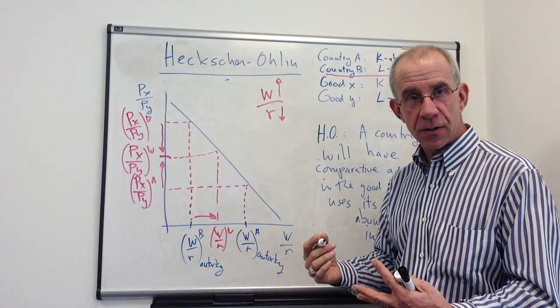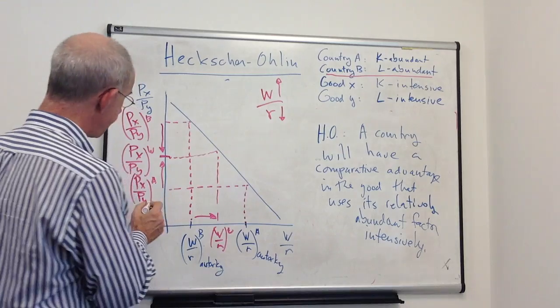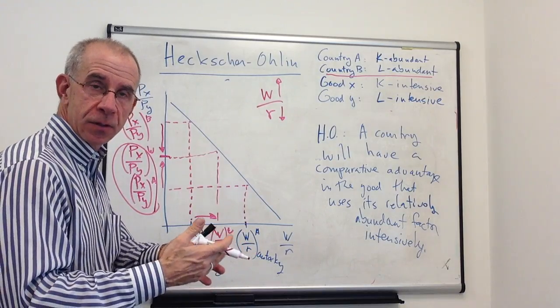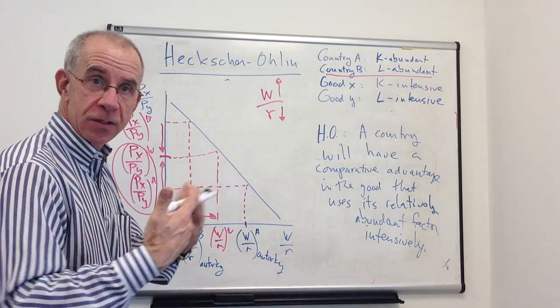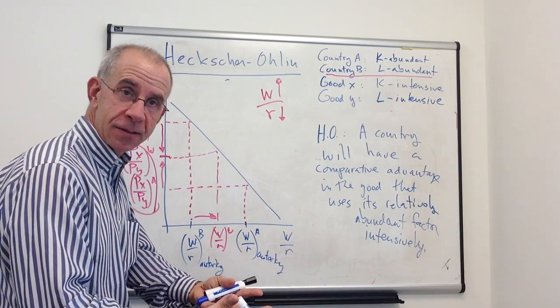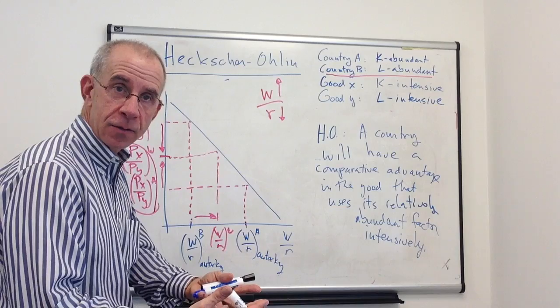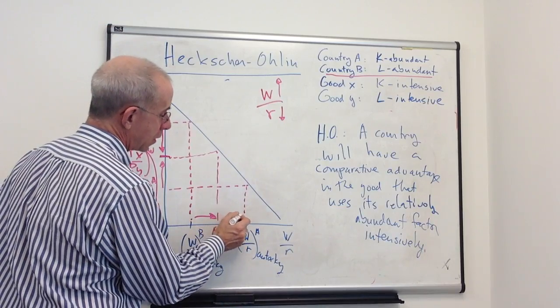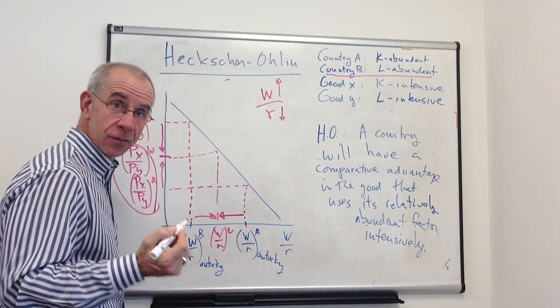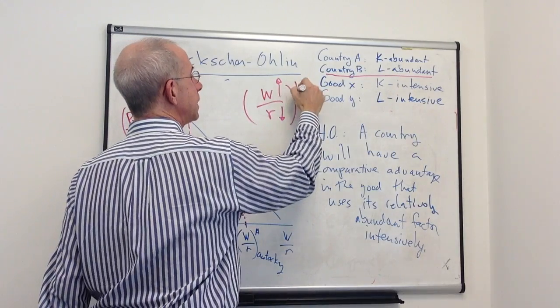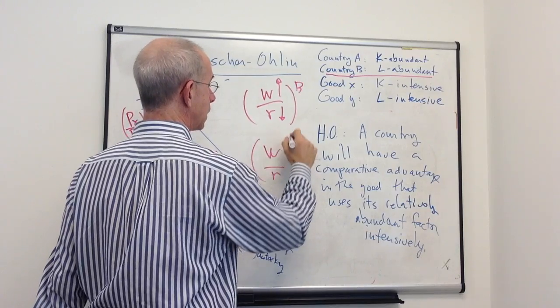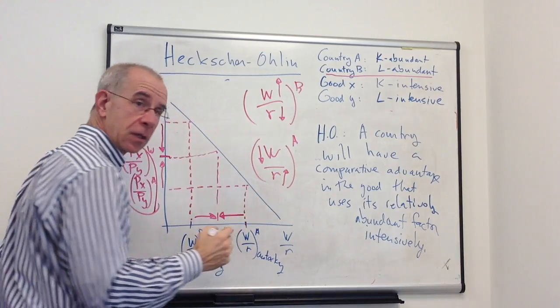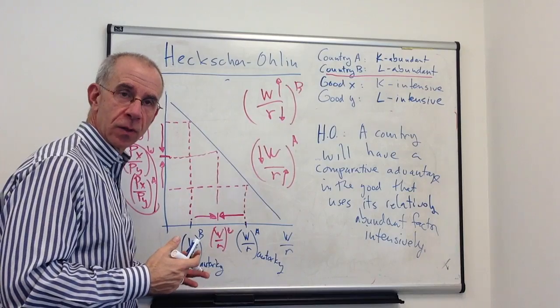Exactly the opposite is going to occur in the capital abundant country. For them, the price of X goes up, sends a signal to produce more of their good of comparative advantage, more of the capital intensive good, putting increased demand on capital within the country. Importing the labor intensive good reduces the demand for labor, causing the wage-rental ratio in A to fall. For them, and this was B, for the other country A, the wage tends to be bid down, the cost of capital tends to go up, reducing the wage-rental ratio.